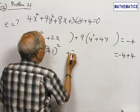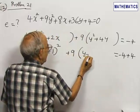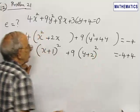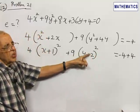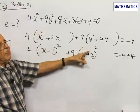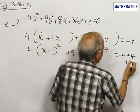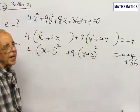Coming to this, 9 times this can be rewritten as (y + 2)². So I have added extra 36 on the left hand side. To compensate for that I will add 36 on the right hand side.